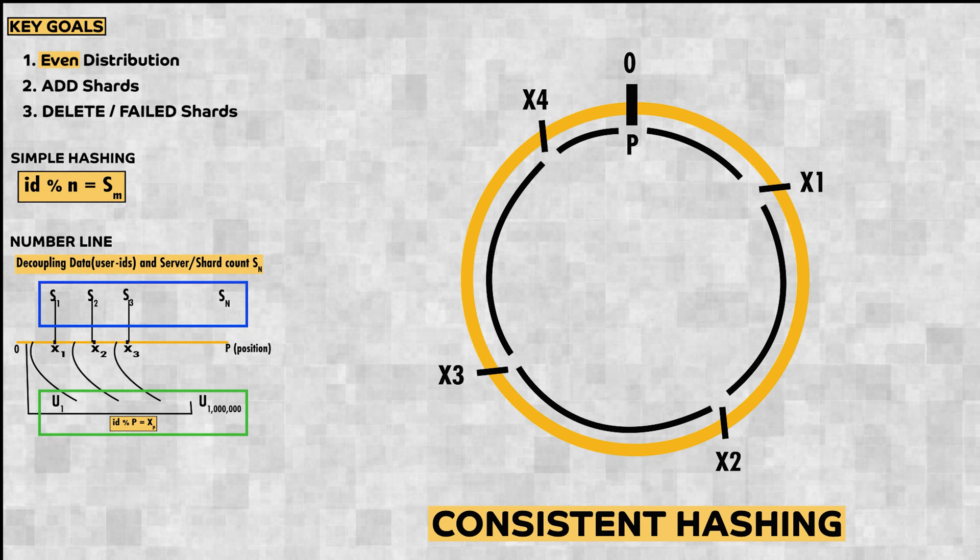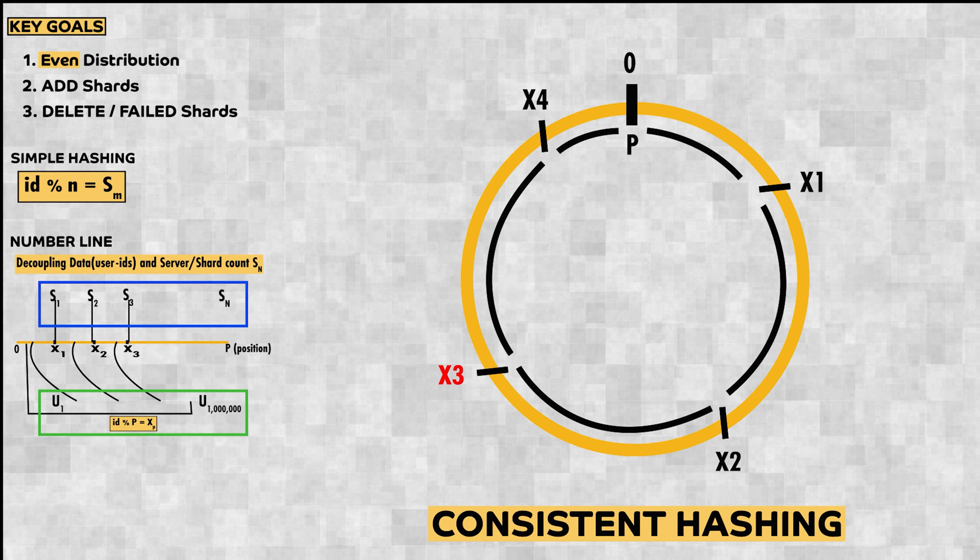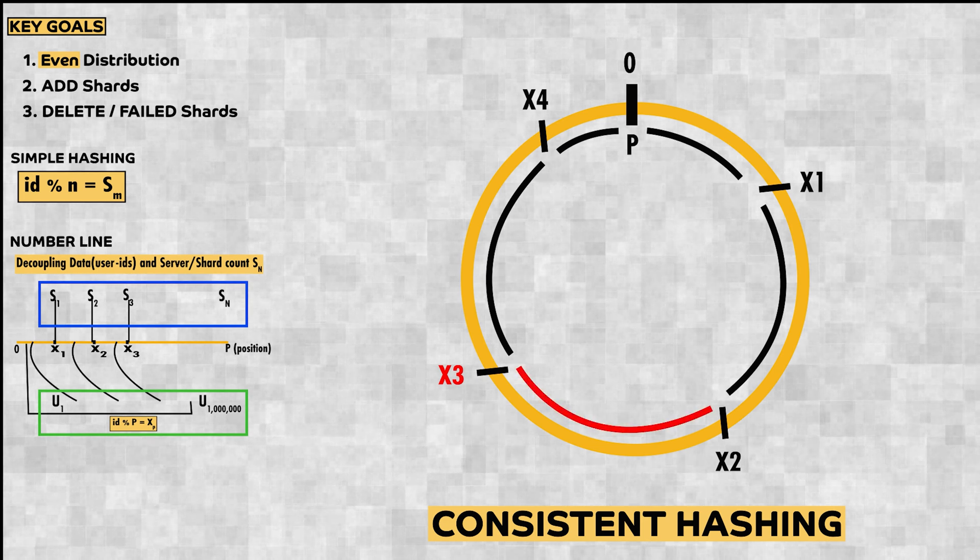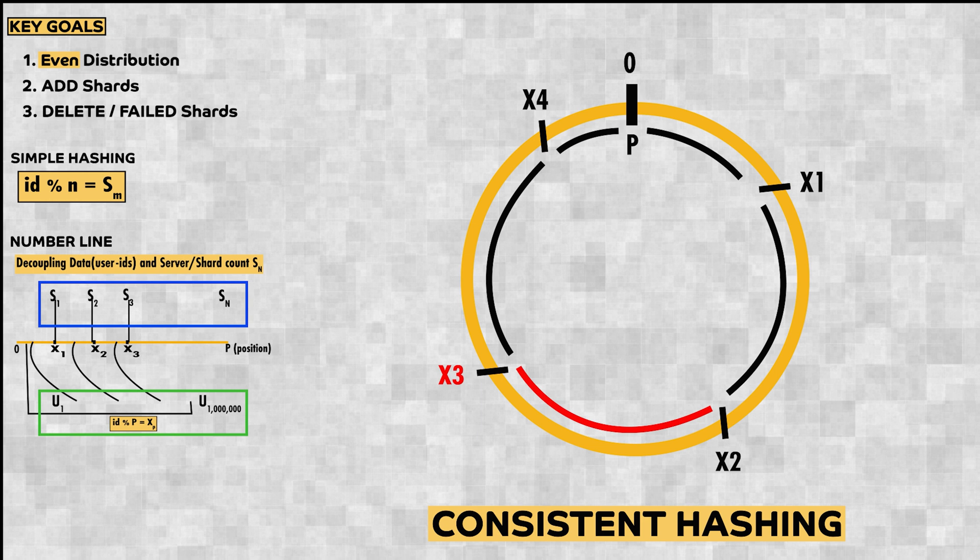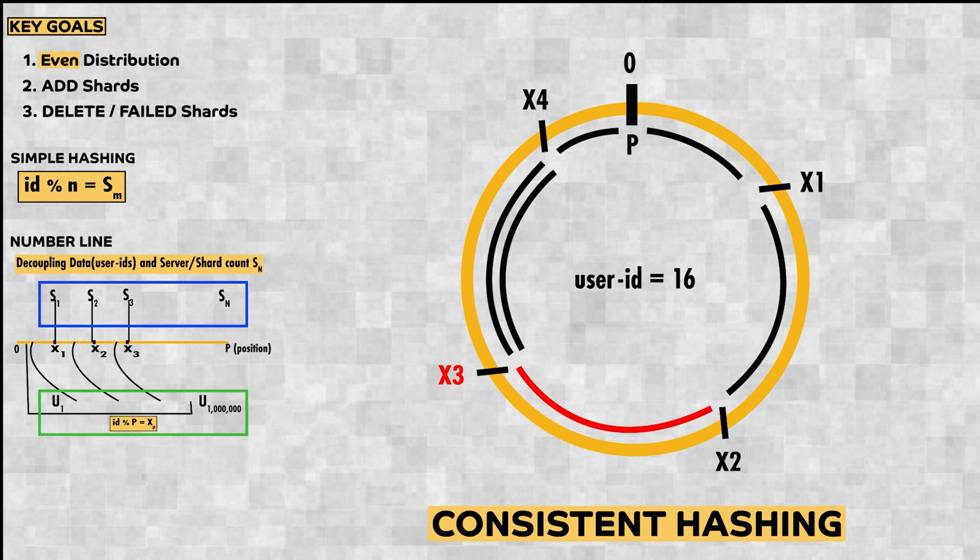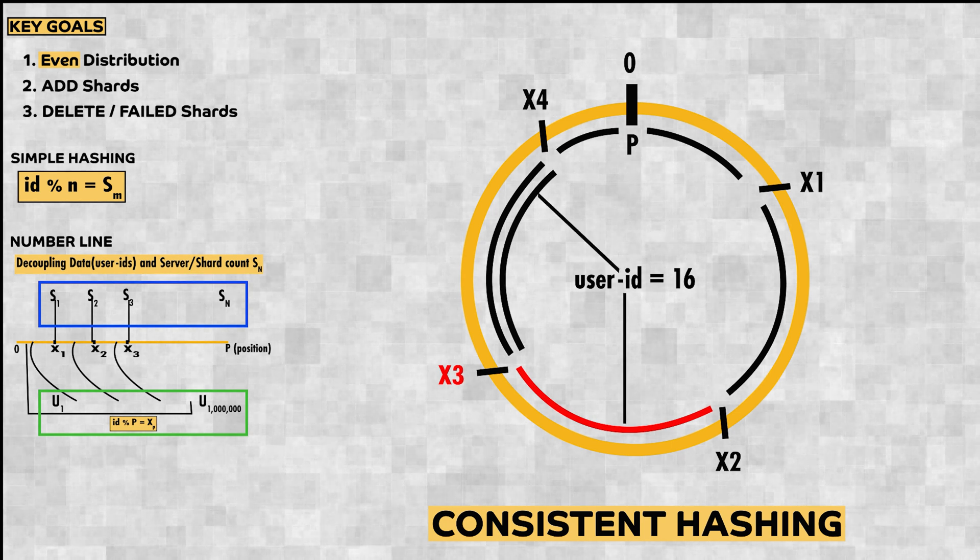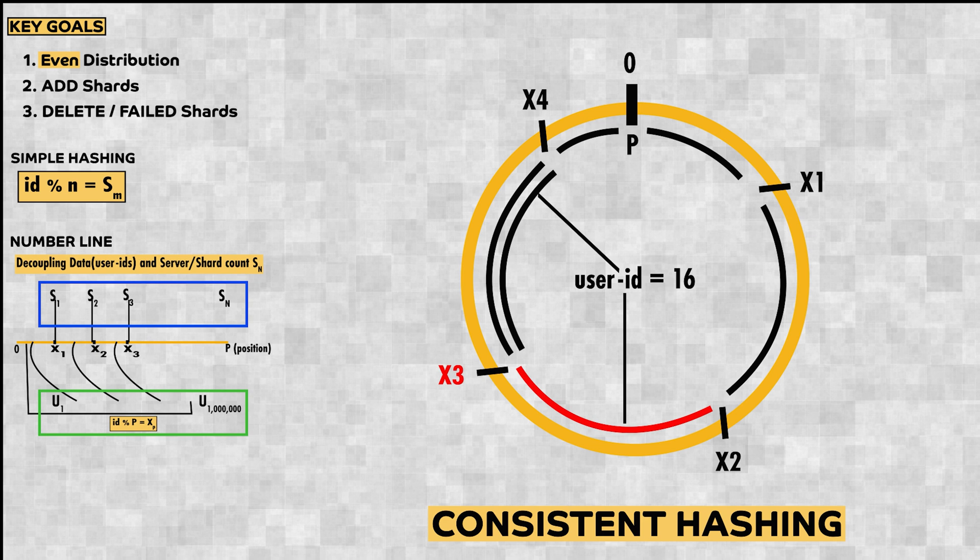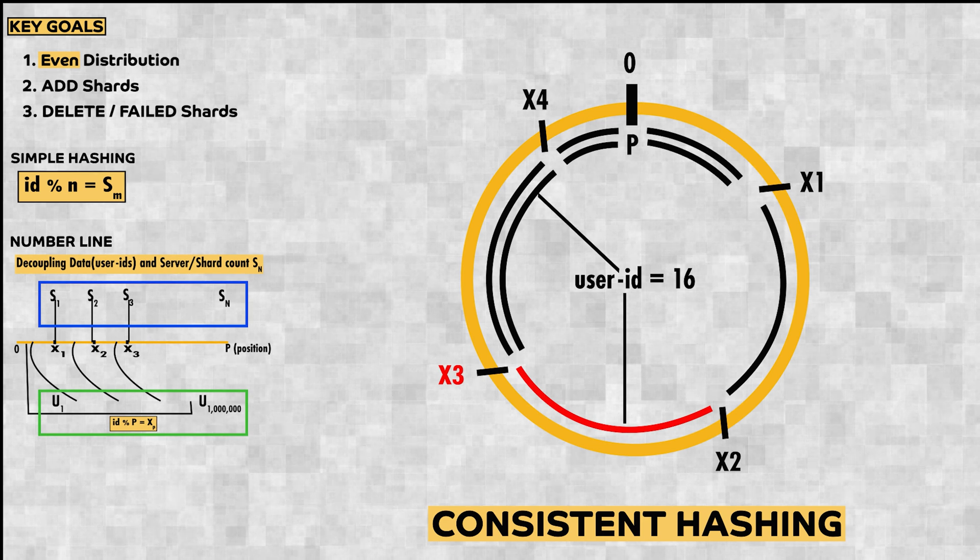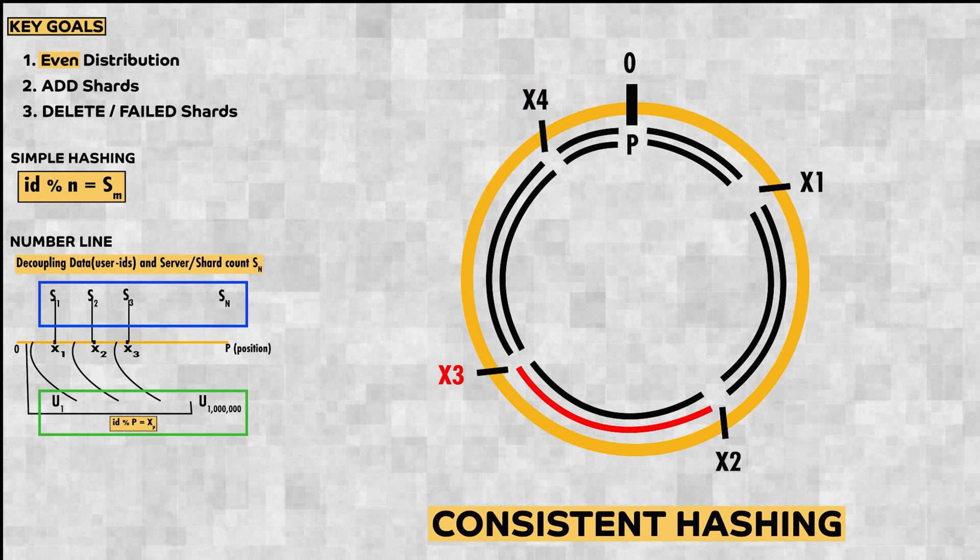But this is not a full solution yet. If a shard x3 goes down, we won't be able to serve the request between x2 and x3, for which we must replicate. Anything owned by x3 shard sector is replicated in x4 shard sector. So if user id 16 is in x3, it will be replicated in x4 sector. If x3 goes down, x4 can take over and similarly with other shards. The probability of two adjacent shards going down is extremely less.